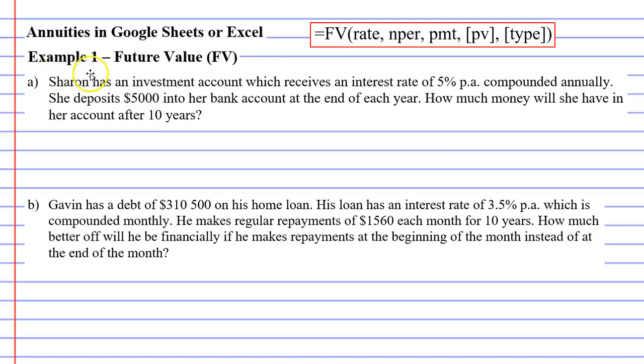In this video we're going to complete example one. There are two examples we're doing here and both of them are future value problems. Sharon has an investment account which receives an interest rate of 5% per annum compounded annually. She deposits $5,000 into her bank account at the end of each year. How much money will she have in her account after 10 years?